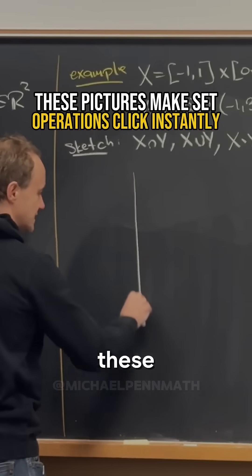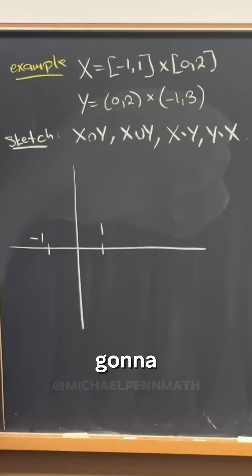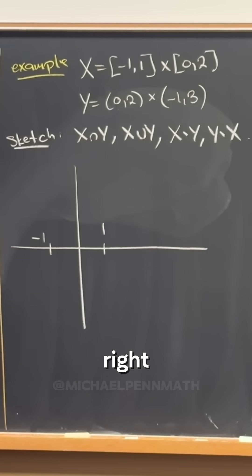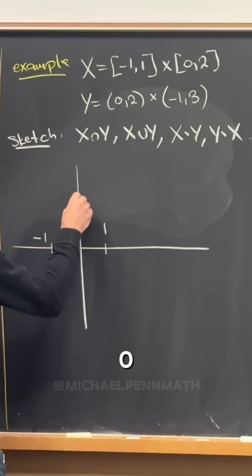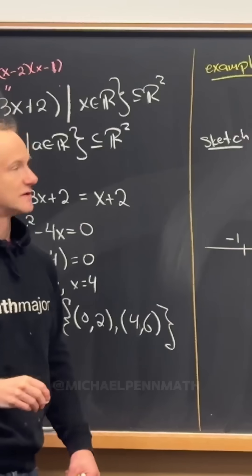So let's get a picture of these on the board. Negative one, one, that's going to be important for defining X. And then zero to two, that's also going to be important for defining X.